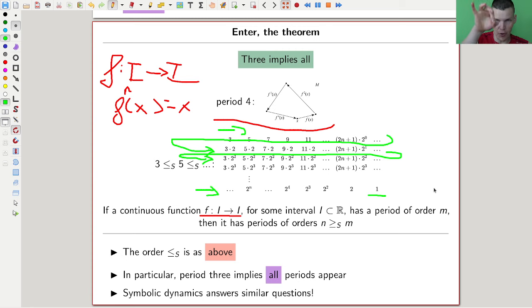Then you can show that if you have some point in any continuous function, ridiculously general, of order m, then it has periods of all the lower order, or all the bigger orders in this order. So if you have something of order two to the four, you have also something of those guys. In particular, if you have something of order three, it's kind of the surprising one, you have everything. You have points of any order, which is kind of very strange.